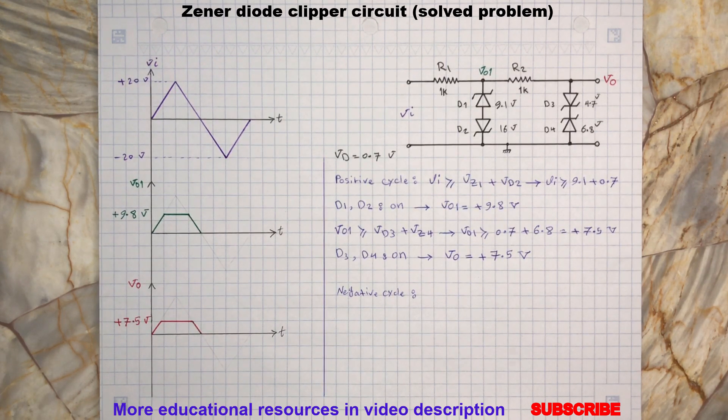Now back to the video. During the negative half cycle, D1 will be forward and D2 will be reverse biased. This means D1 will only need minus 0.7 volt to conduct while D2 will need minus 16 volt. Because these two diodes are in series, when the input voltage reaches minus 16.7 volt, then D1 and D2 will turn on.